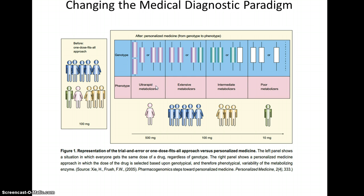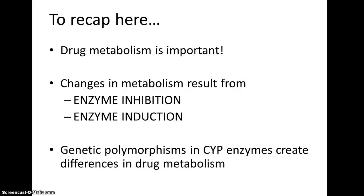The clinical implications of understanding patient genotype and phenotype are very exciting when we think about maximizing drug response. To recap: drug metabolism is important; changes in metabolism result from enzyme inhibition — directly inhibiting enzyme activity — or enzyme induction, increasing enzyme synthesis at the gene level. Furthermore, genetic polymorphisms, or multiple alleles, exist for genes coding for CYP450 enzymes, also creating differences in drug metabolism. All of these are factors to consider when treating patients, particularly those exposed to multiple drugs.